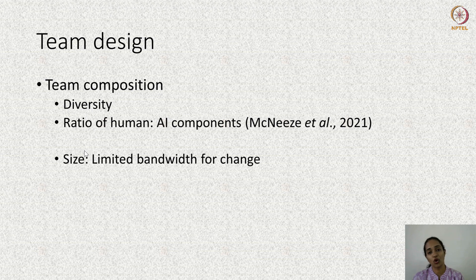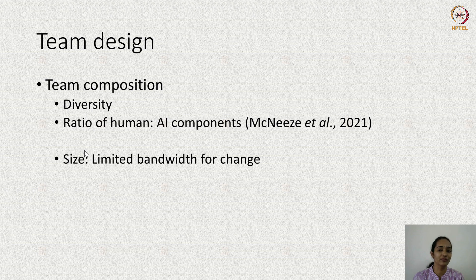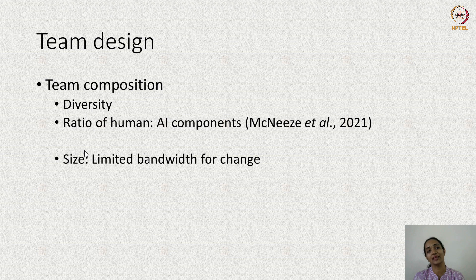In case there is a change in either the size or the ratio of human-AI components, the AI teammate will find it difficult to function. Therefore, when the team is composed, designers must keep in mind whether there is a likelihood of change in diversity or team size, and program the AI to handle such change. It is also important to consider team size for human members — if the number of robots a human must control increases, they will need prior training.